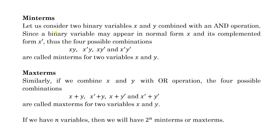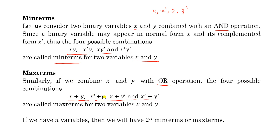Let us define min terms and max terms. For two variables x and y, combining all possibilities using AND gives four min terms: xy, x dash y, x y dash, and x dash y dash. For three variables x, y, z, you will have eight min terms. For max terms, do the same but combine with OR: x plus y, x dash plus y, x plus y dash, x dash plus y dash — these are the max terms for two variables x and y.